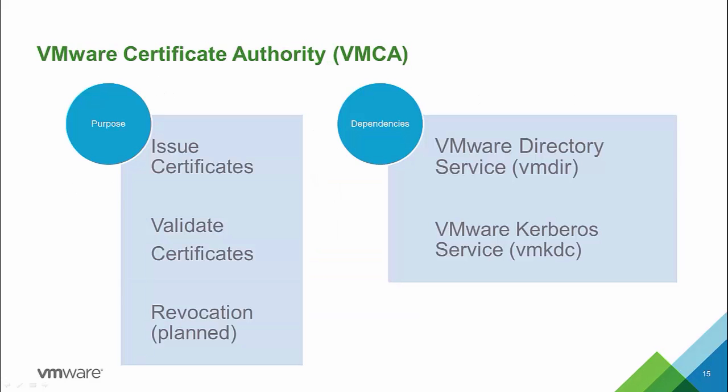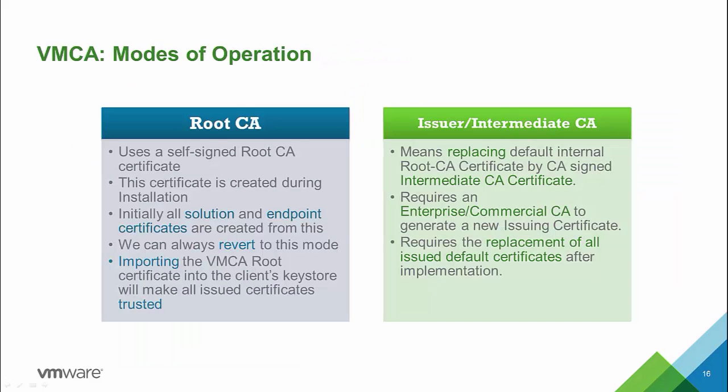We will now take a closer look at the VMware Certificate Authority. The purpose of the VMCA is to issue certificates, validate them, and in the future revoke them. It depends on the VMware Directory Service and the VMware Kerberos Service. The VMCA can operate in two different modes: root mode or intermediate certificate authority mode. In root CA mode, it has its own self-signed root CA certificate created during installation. All solution and endpoint certificates are initially created from this, meaning importing the VMCA root certificate into the client's key store will make all issued certificates trusted.